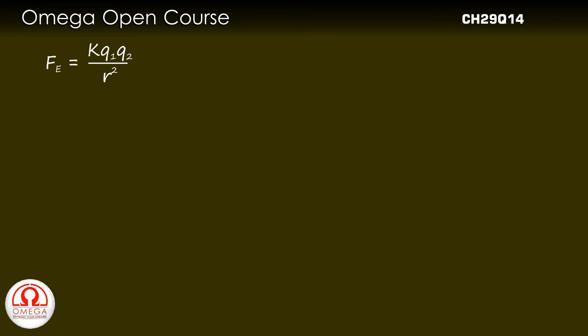The gravitational force between two particles having mass m1 and m2 and at a separation r is given by g m1 m2 by r square.